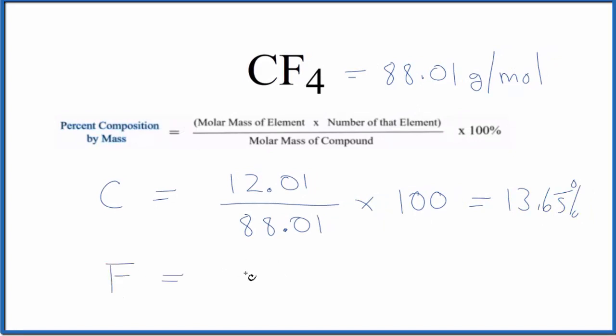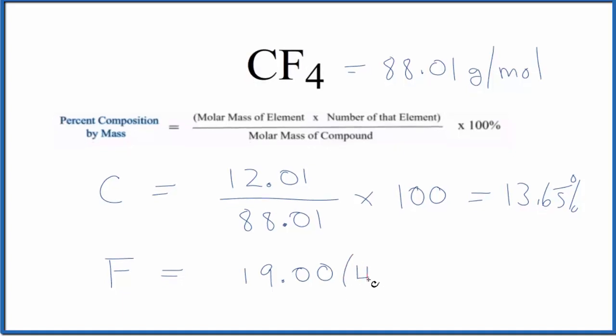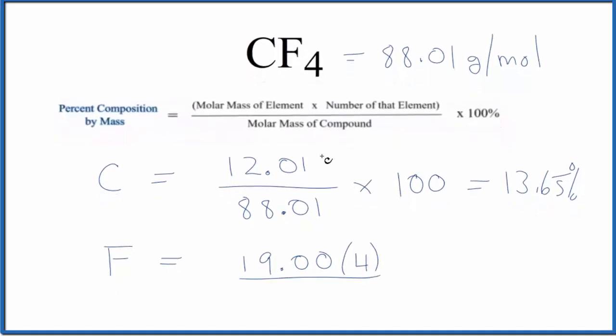Fluorine has an atomic mass of 19.00 and we have four of them, so we multiply by four and divide by the molar mass of CF4, which is 88.01. Multiply by 100 to get a percent, and we end up with 86.35%.